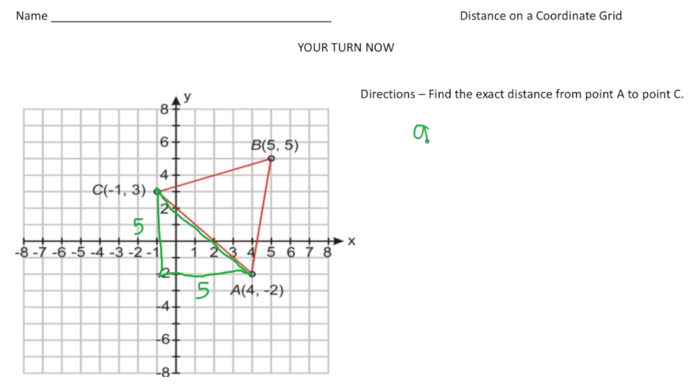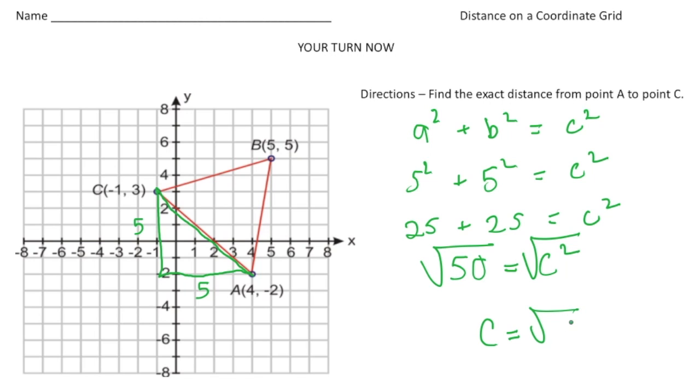So when we use the theorem now, A squared plus B squared equals C squared. So 5 squared plus 5 squared equals C squared. And 5 squared is 25 plus 5 squared is another 25 equals C squared. 25 plus 25 is 50. So 50 equals C squared. So now to get C, we take the square root of both sides and C equals the square root of 50, which was the same answer as the problem we did together. And there it is. Alright, how'd you do?